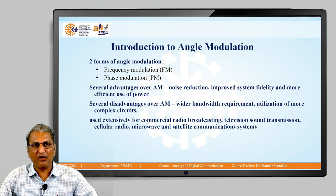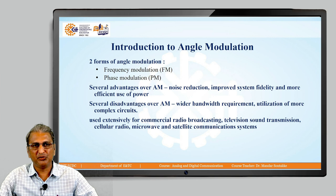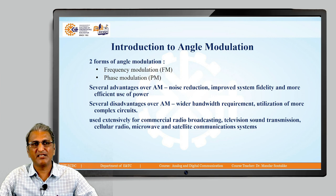The advantages of FM over AM are noise reduction, improved system fidelity, and more efficient use of power. The disadvantages over AM are a wider bandwidth requirement and utilization of more complex circuits. FM is used extensively for commercial radio broadcasting, television sound transmission, cellular radio, microwave, and satellite communication systems.